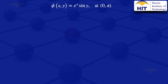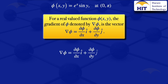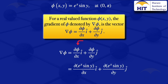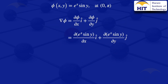So I'll start by looking at the first one. Phi of xy equals exponent of x sine y. If we have a real valued function phi of xy, the gradient of phi, which we denote by grad phi, is the vector: partial derivative of phi with respect to x times i, plus partial derivative of phi with respect to y times j. So we have our grad phi, and we substitute exponent of x sine y into it.